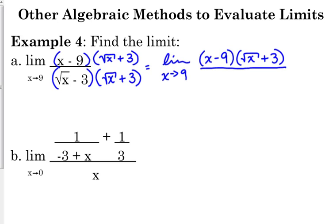the square root of x times the square root of x is just x. The outside gives us positive 3 square roots of x. The inside gives us negative 3 square roots of x. And the last gives us negative 9. So check it out. Those square roots cancel.